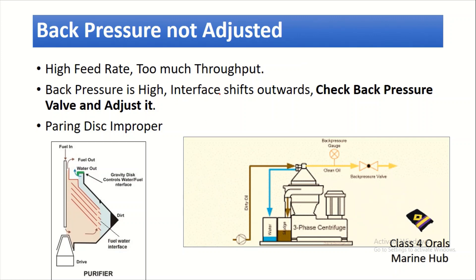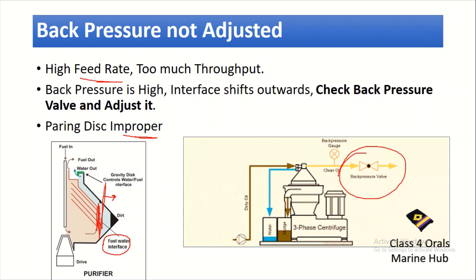The next reason is that back pressure is not adjusted. If back pressure is not adjusted, there can be a high flow rate or too much throughput. When back pressure is high, the oil-water interface will shift outwards — as you can see here, there is a fuel and water interface. It will try to shift outward, and when it shifts outward, the purifier will overflow. We have to check and adjust the back pressure. The pairing disk can also be improper, which can also cause overflow. Adjust the back pressure well to avoid overflow.